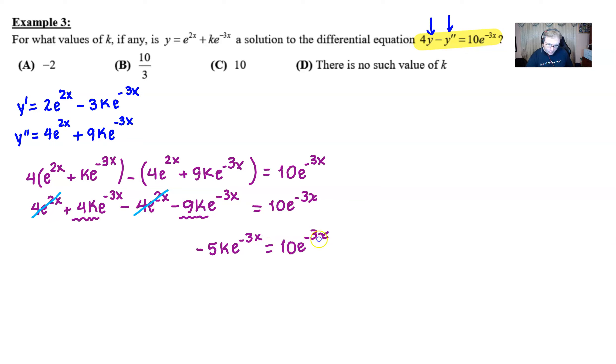Because, basically, in order for these two things to be equivalent, the negative 5k has to equal the 10. One thing that you could do is just divide e to the negative 3x away from both sides. And you could solve it from that point. But, anyway, if you know that negative 5k is 10, you're going to get k equal negative 2.